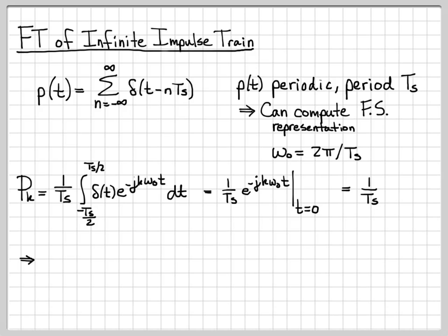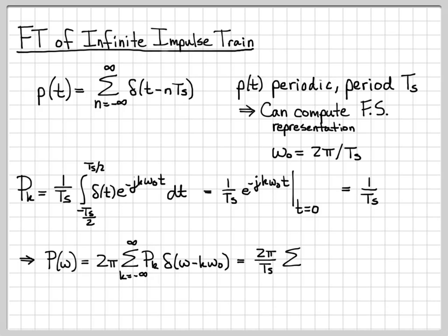Now that we know all the Fourier series coefficients, we can write down the Fourier series representation of p(t). It is 2π times the sum from minus infinity to infinity of p_k · δ(ω − kω₀). Plugging in p_k = 1/T_s, we bring 1/T_s out front. This is the Fourier series representation of p(t) — in the frequency domain it is just another infinite collection of impulses.